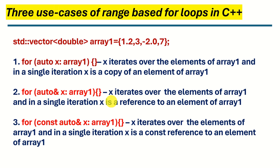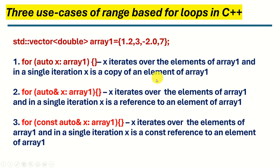Here's the second use case. We write 'for', then 'auto&' with the reference symbol, then x, then array1, and inside we write some code. x iterates over the elements of array1 and in a single iteration x is a reference to an element. x will take values 1.2, then 3, then -2.0, then 7. The difference from case 1 is that x is actually a reference or alias of a particular element — by changing x we can change the actual element stored in array1.